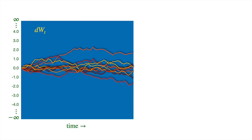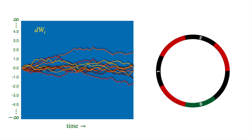Now how does one construct a probabilistic model of this Brownian motion? Remember our mini version of the roulette with only seven pockets, and the probability space was in terms of the triple: the sample space, sigma algebra of subsets of this space, and a probability measure respectively.